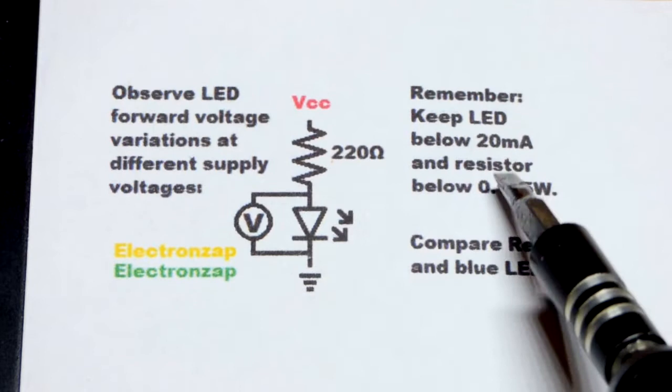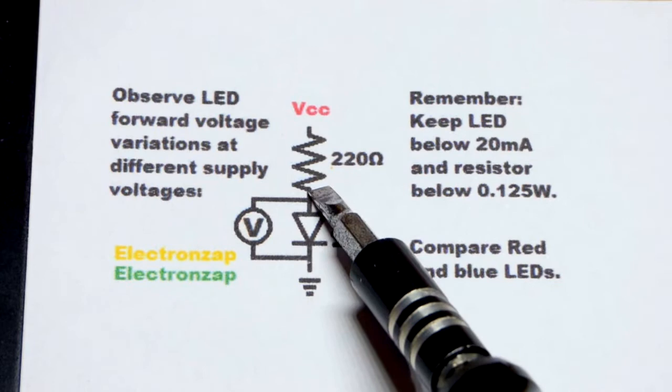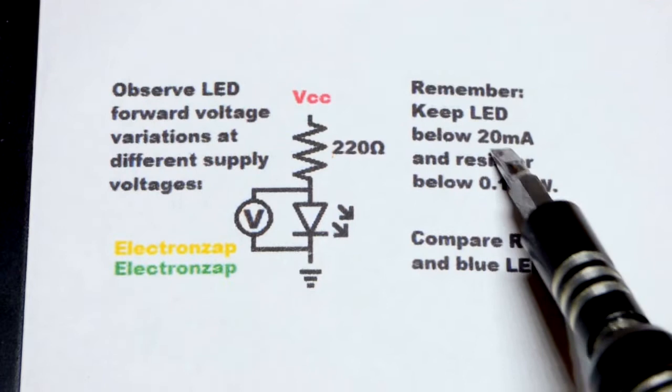So the voltage across the resistor will be the supply voltage minus whatever the LED is dropping. You take that voltage across the resistor and multiply it by whatever the current is going. We'll keep it under 20 milliamps. As long as we keep current under 20 milliamps, the resistor will be just fine.